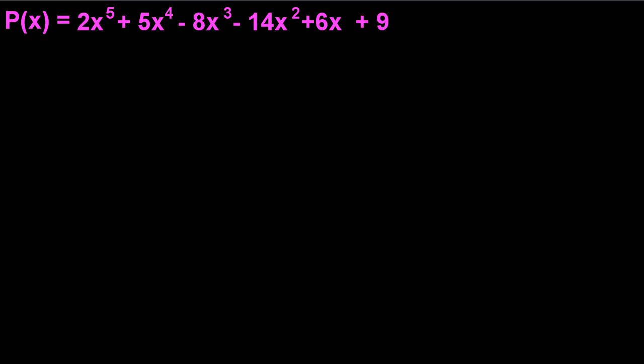The polynomial that we're going to be looking at is p(x) = 2x⁵ + 5x⁴ − 8x³ − 14x² + 6x + 9.